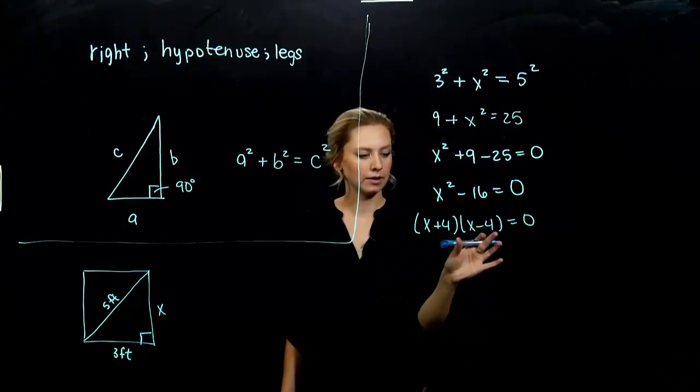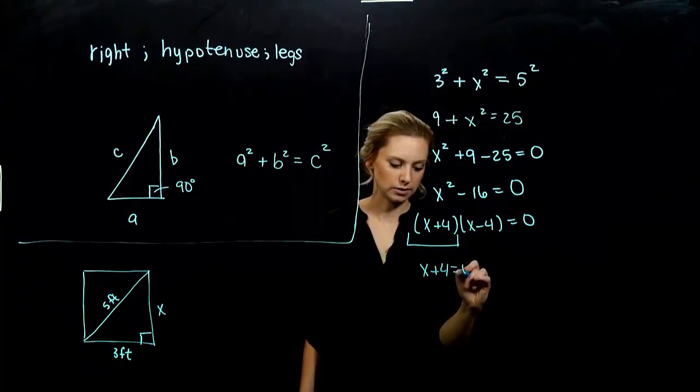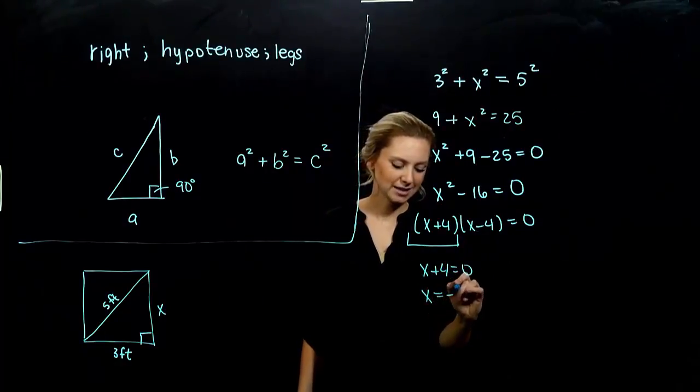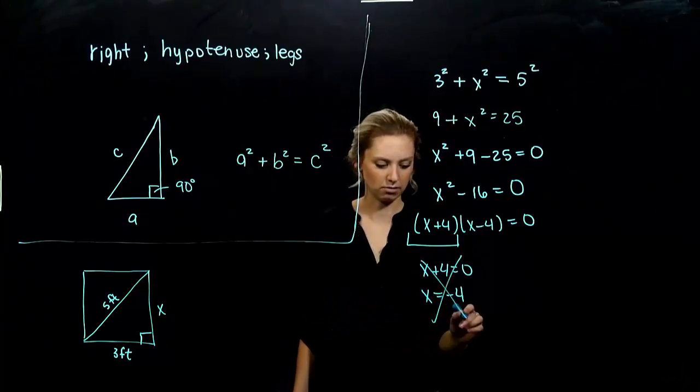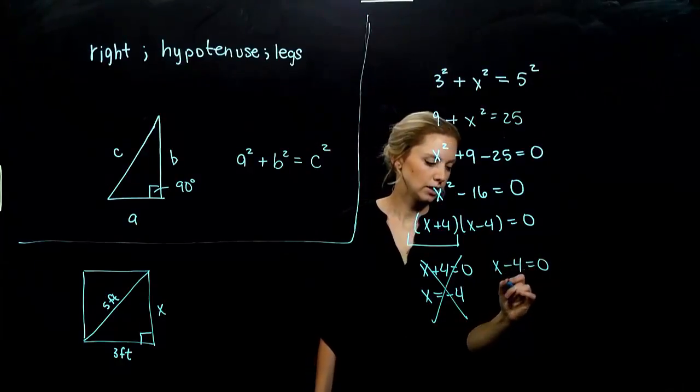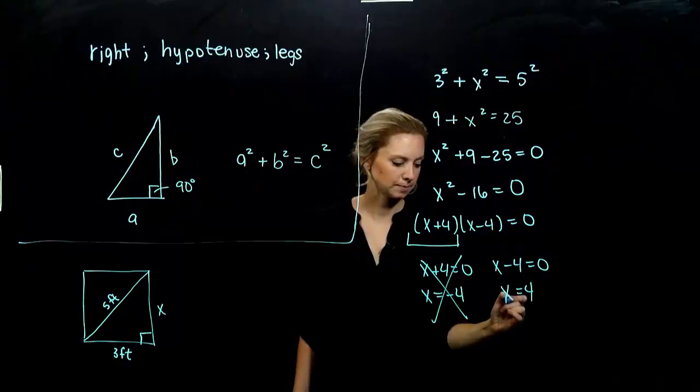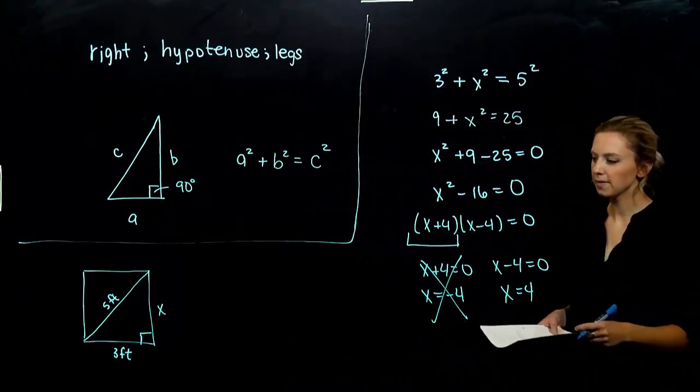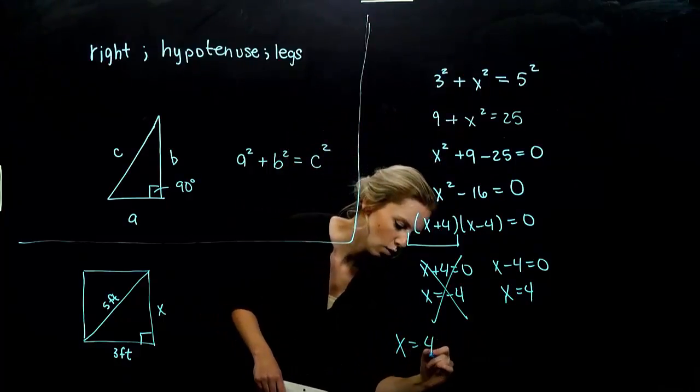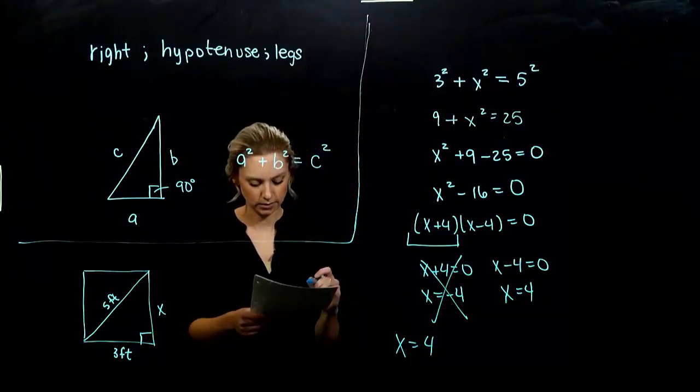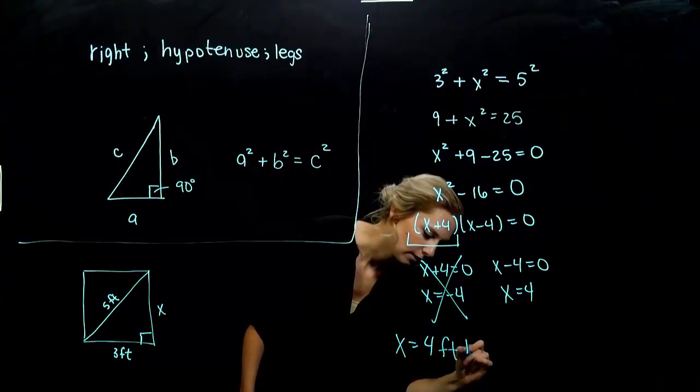I've got a product being equal to zero, so either the first piece is equal to zero, which gives me x = -4. I'm talking about a length here, so that one's out. My other option is going to give me positive 4. That works for a distance. The vertical height is x = 4 feet.